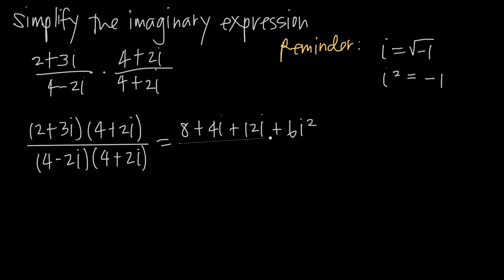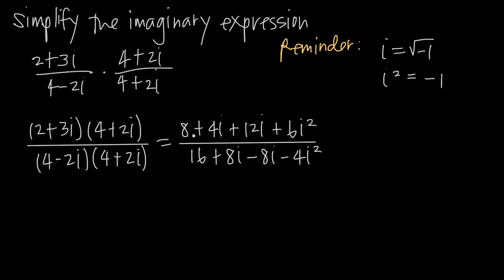We'll do the same thing in the denominator and FOIL out those binomials. 4 times 4 gives us 16. 4 times 2i gives us plus 8i. Negative 2i times 4 gives us negative 8i. And negative 2i times positive 2i gives us negative 4i squared. The reason conjugate method works so well is that in the denominator we now have plus 8i and minus 8i, which cancel with one another — they net to 0. That's always going to happen when you multiply the denominator by its conjugate.